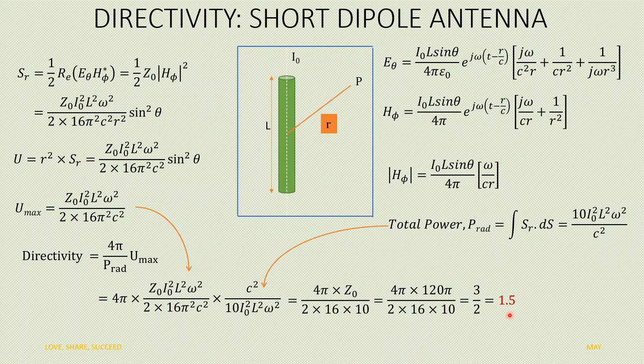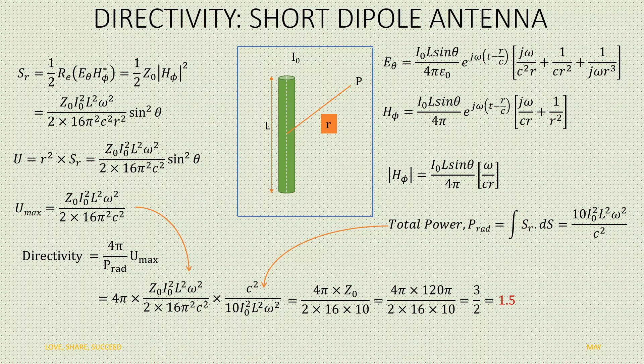In summary, a short dipole antenna has a directivity of 1.5, whereas a half wave dipole antenna has a directivity of 1.64. Therefore, a half wave dipole antenna has better directivity than a short dipole antenna.